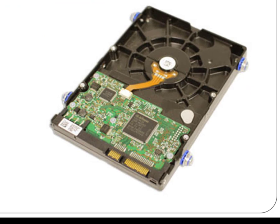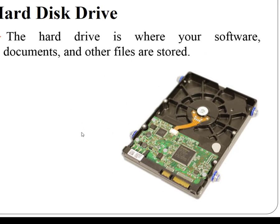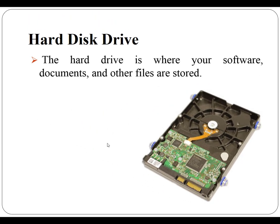The next important component is the hard disk drive. The hard drive is where your software, documents, and other files are stored. The hard drive is long-term storage, which means the data is still saved even if you turn off or unplug your computer. When you run a program or open a file, the computer copies some of the data from the hard drive onto the RAM. When you save a file, the data is copied back to the hard drive.